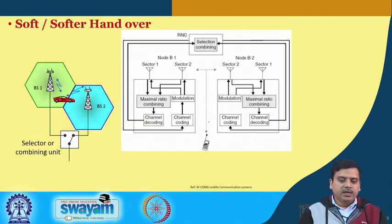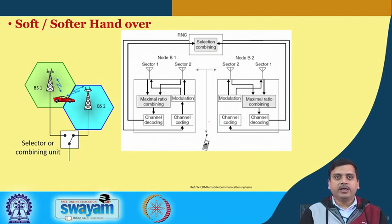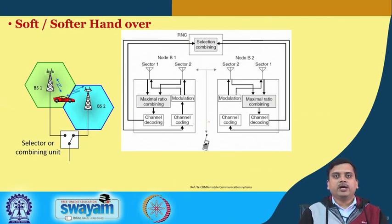Moving further, there is also the possibility of soft handover. Because it is a single frequency network, the user equipment can simultaneously combine with more than one base station. Handover failure probabilities are significantly reduced because users can be assigned different codes from different base stations, and the receiver simply switches the code to transition to the next base station.